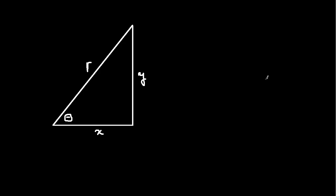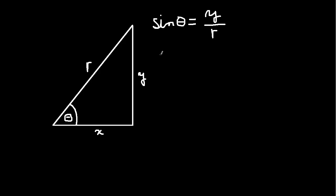If you recall, here we have a right triangle. The vertical side is length y, the horizontal side is length x, and the hypotenuse is length r. We call this angle right in here theta. The definitions we have been using is that the sine of theta is equal to y divided by r, and cosine of theta is equal to x divided by r.